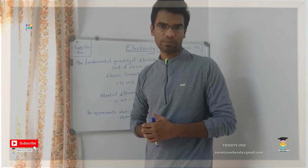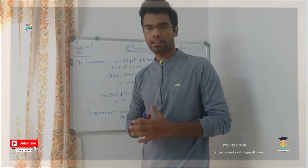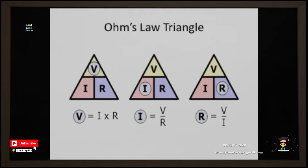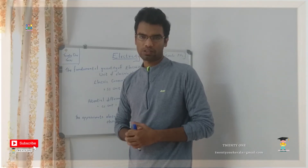The resistance opposes the flow. This is Ohm's Law. We will try V, I, and R — let's try the technique. V is equal to IR. I is equal to V by R. R is equal to V by I. The unit is the resistance. The unit of resistance is Ohm!